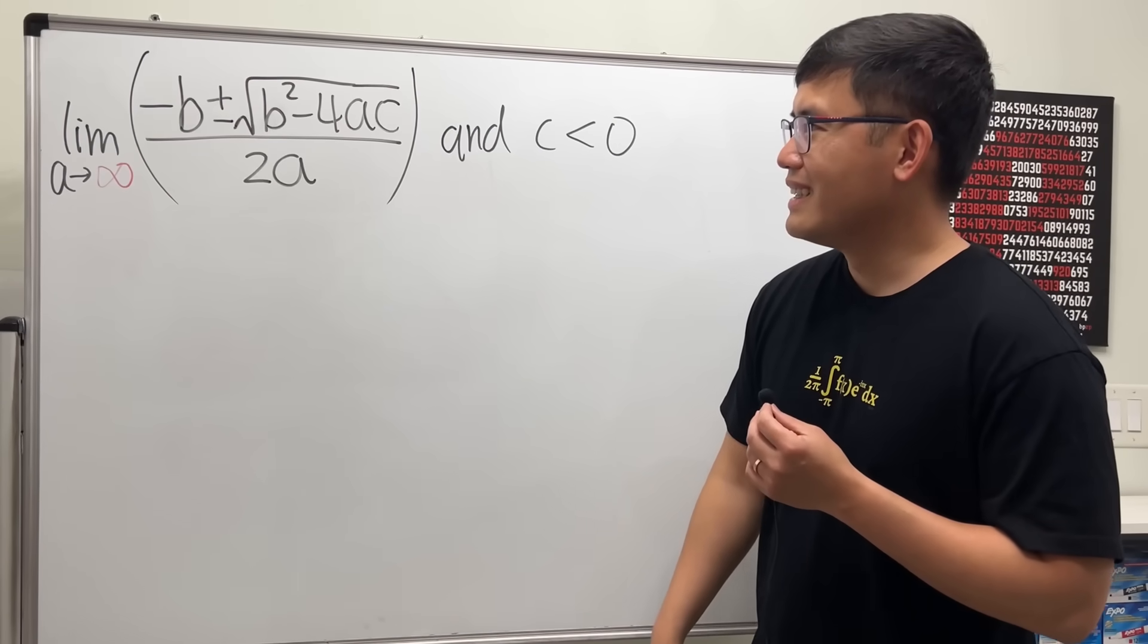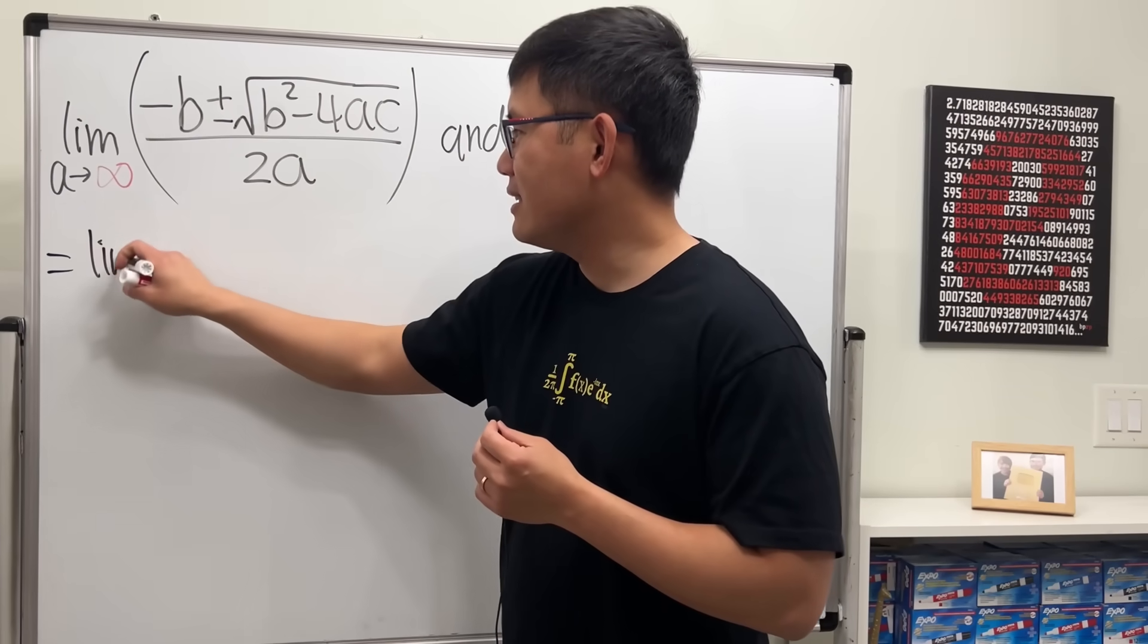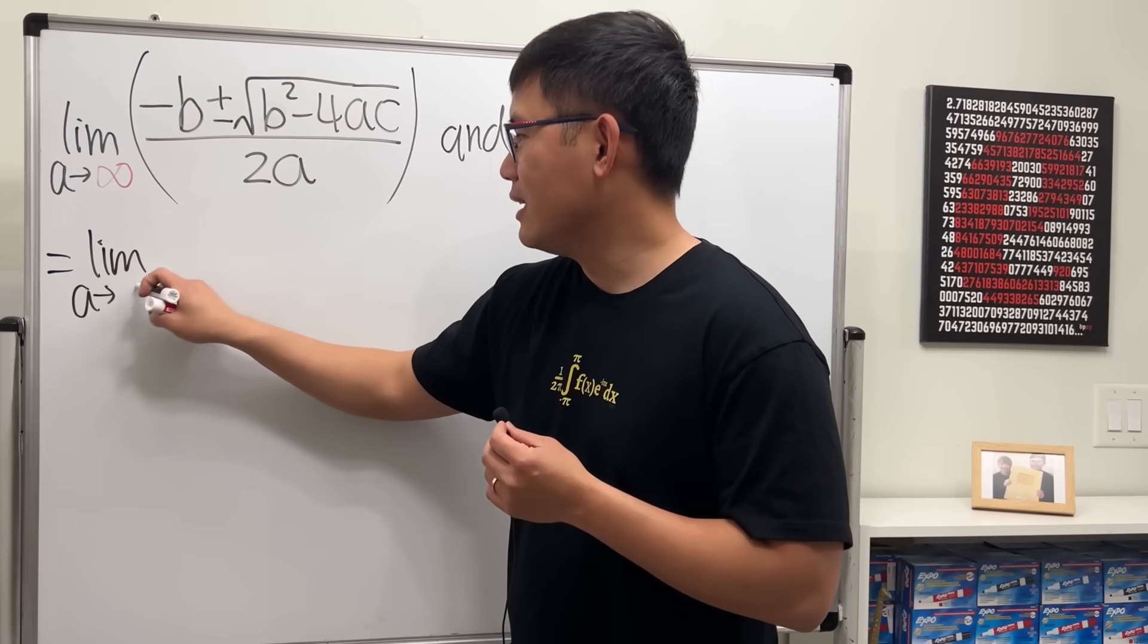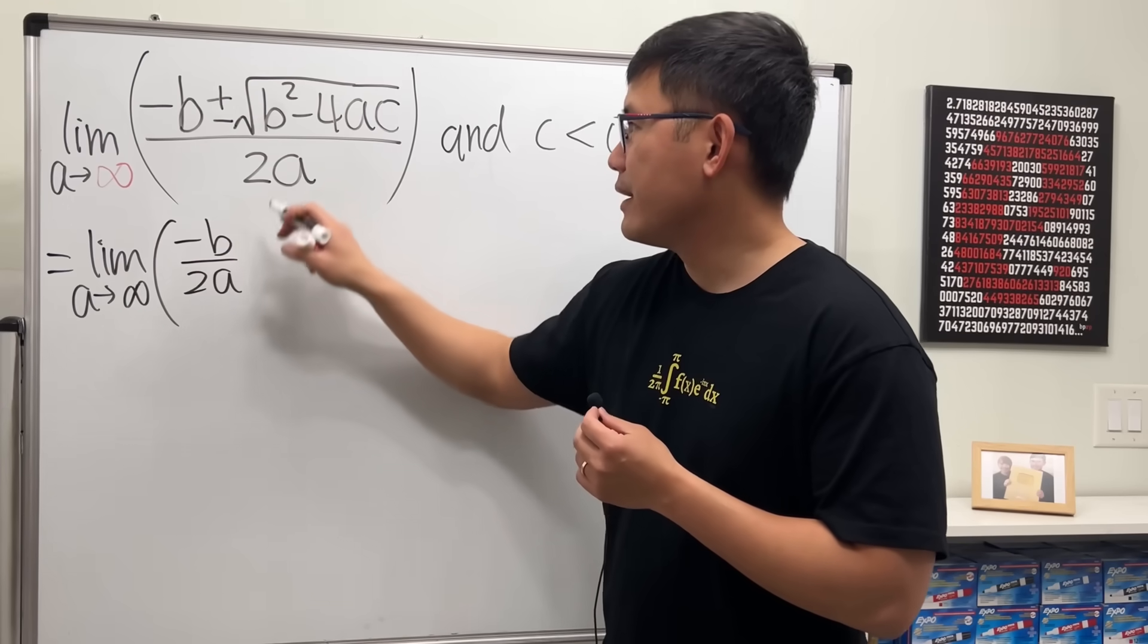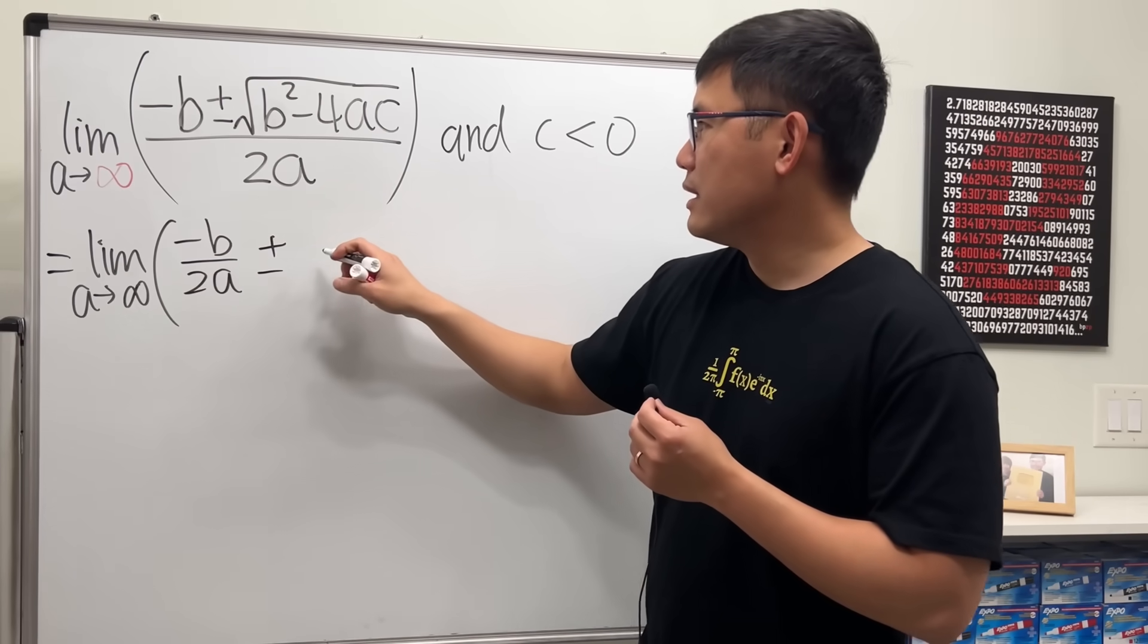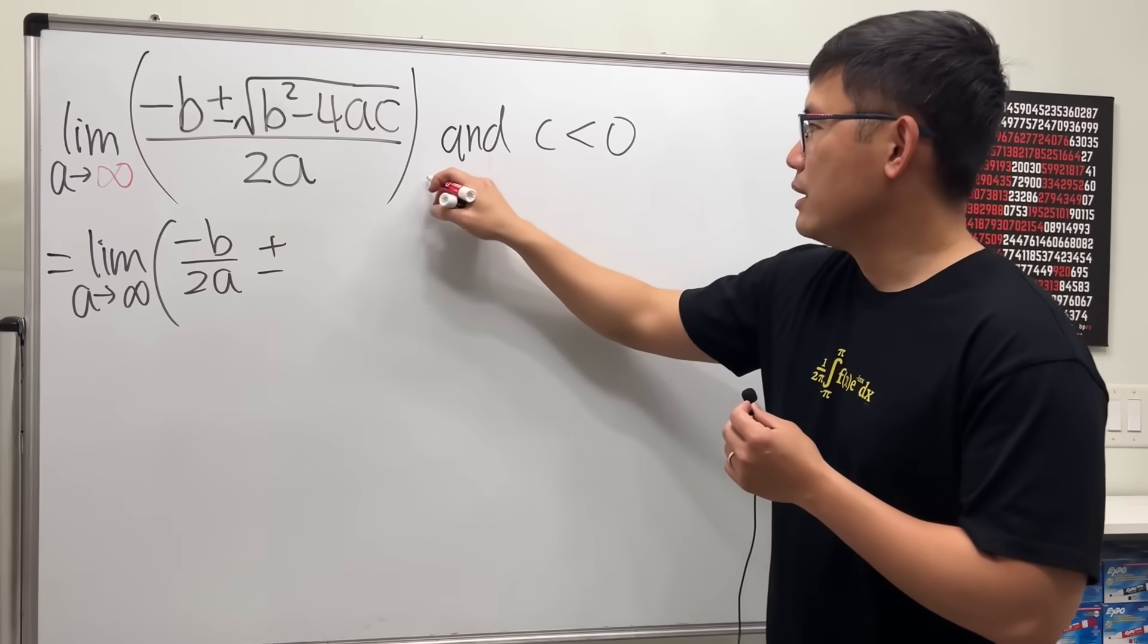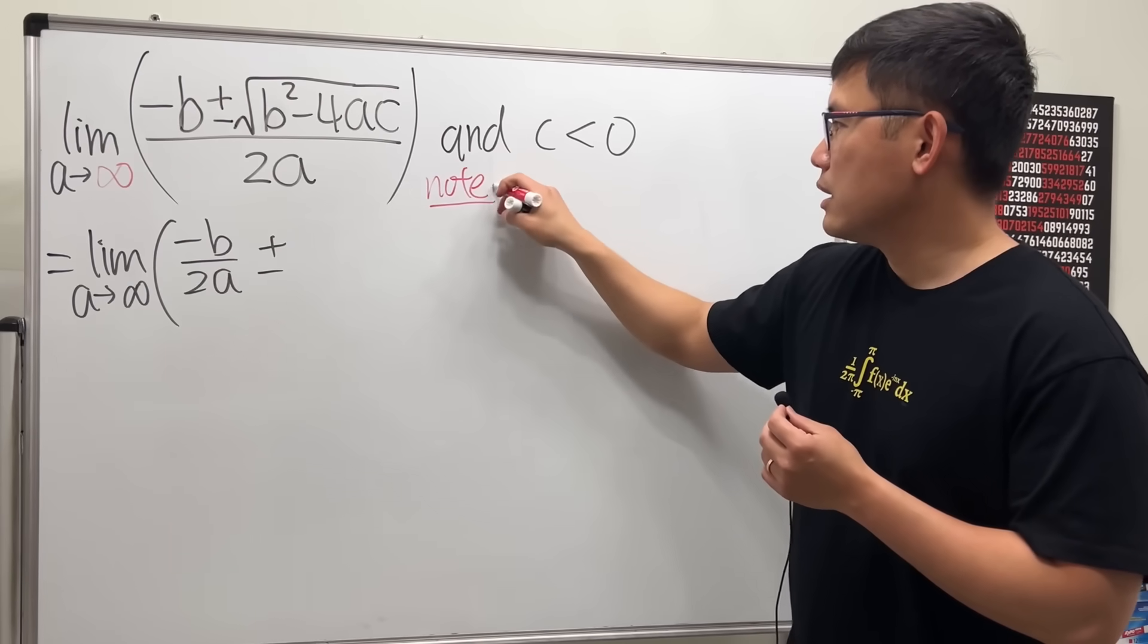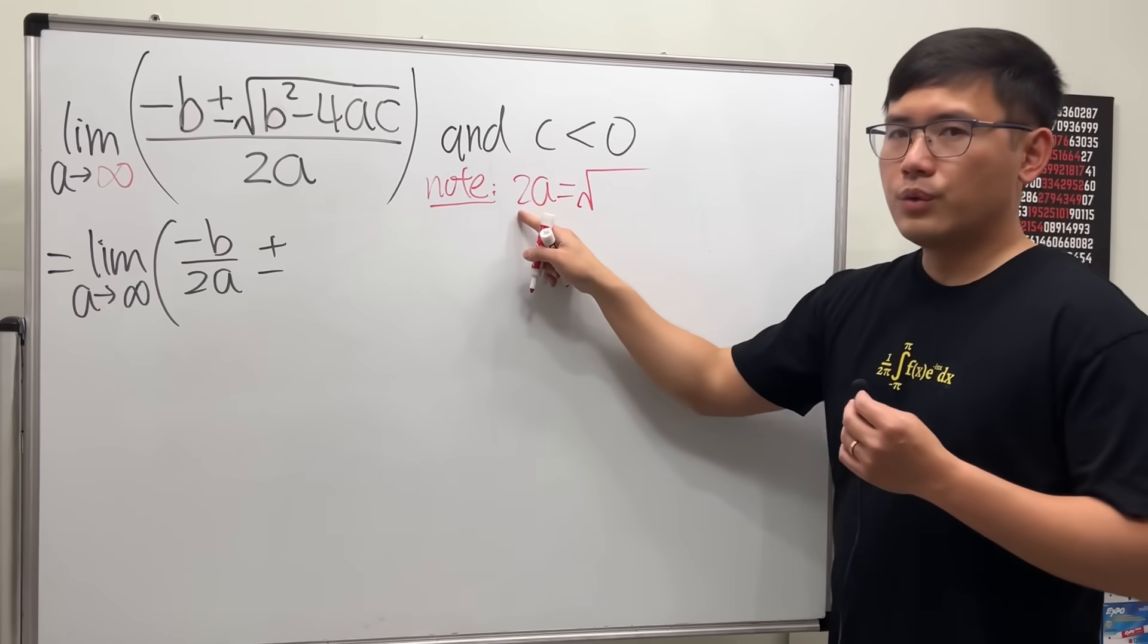Let's split the fraction. So this is the limit as a approaching infinity: -b over 2a plus or minus—I'm going to put this inside the square root.